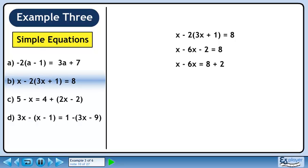Collect terms with x on the left side and constants on the right side. Simplifying gives minus 5x equals 10. Divide both sides by minus 5 to isolate x. Our final answer is x equals minus 2.